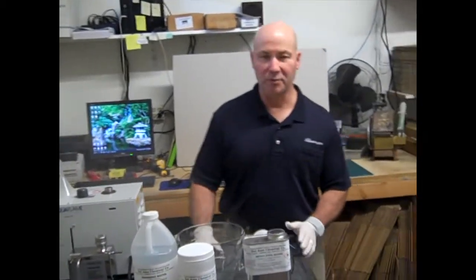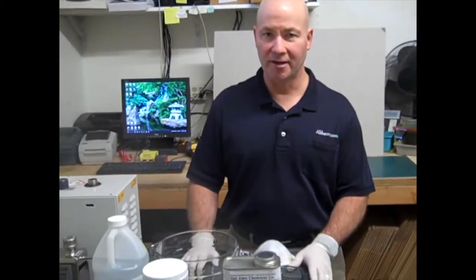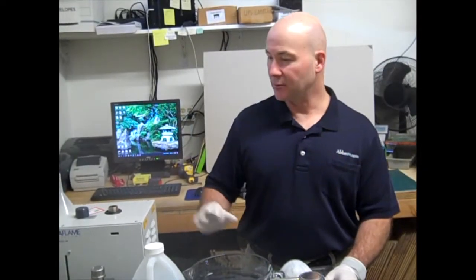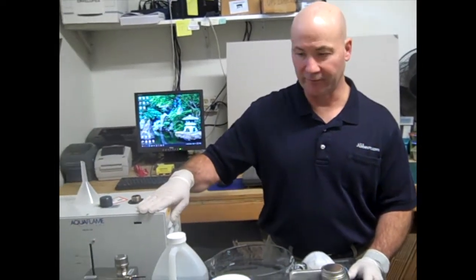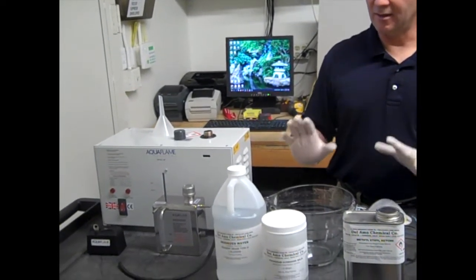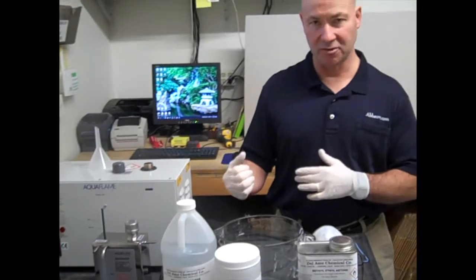We have three different sizes of machines. We've got a 500, an 800, and a 1200. Today we're going to demonstrate our model 500 Aquaflame machine, and what we're going to show you is how to introduce the chemicals to the machine.